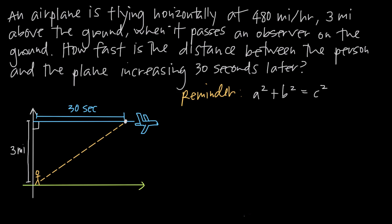So how do we deal with this as a related rates problem? We have these two distances changing — increasing — with respect to time. Because we have a right triangle, we can model this scenario with the Pythagorean theorem. So if we call this side A, this side B, and the hypotenuse C, then we can say A squared plus B squared is equal to C squared.